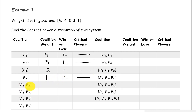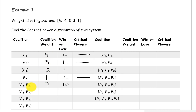The coalition containing players 1 and 2 has a weight of 4 plus 3, or 7. This is a winning coalition. If we remove player 2, the weight drops to 4, so player 2 is critical. If we remove player 1, the weight drops to 3, so player 1 is also critical. Both player 1 and player 2 are critical here.